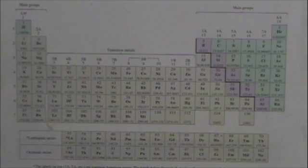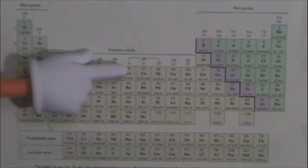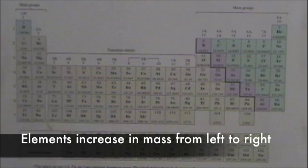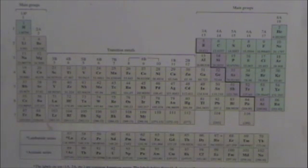One part of the pattern involves the rows. This way. And it's this. As you go across rows, elements get heavier, more massive. The reason is because as you go across, each element has more subatomic particles in it.